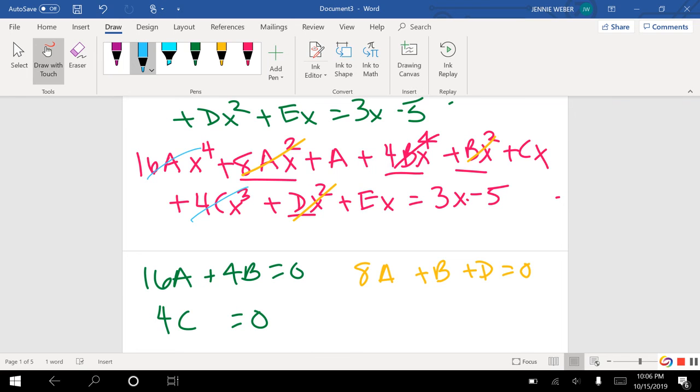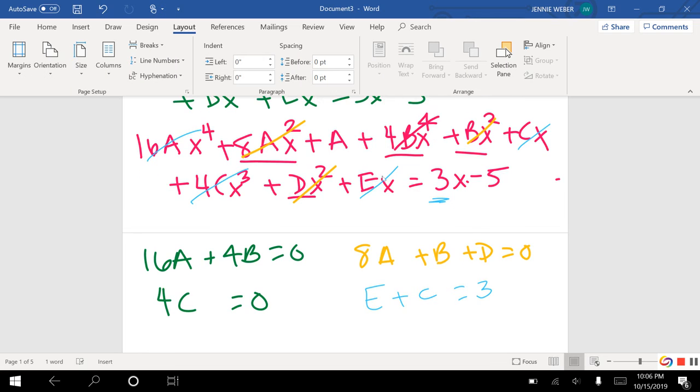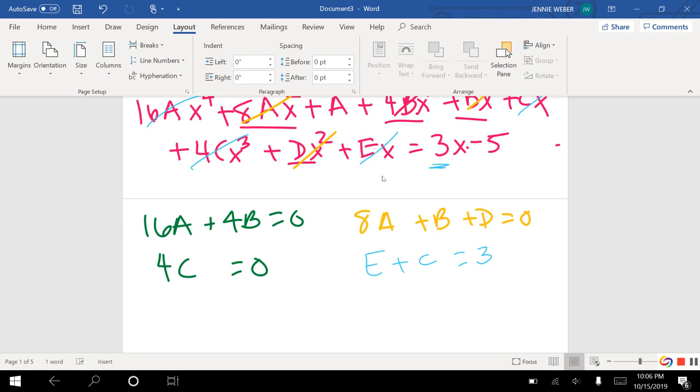Then I have E, let's make a better looking E. I have E plus C right there equals 3, because that does have something I'm equating on the other side. And then finally, I have A equals negative 5.